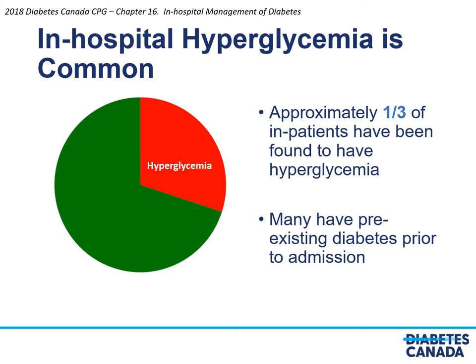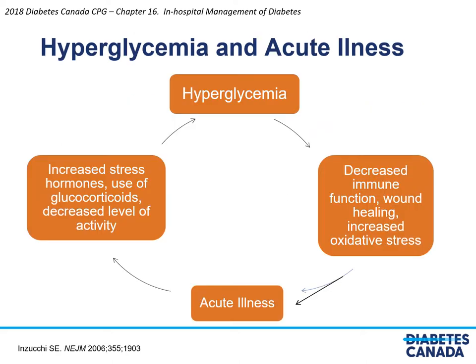In-hospital hyperglycemia is common, with approximately one-third of inpatients having been found to have hyperglycemia. Many patients have diabetes prior to admission. Hyperglycemia has a strong relationship to acute illness — it both reflects and results in a number of physiological changes which decrease immune function and wound healing, and increases oxidative stress, which can further exacerbate acute illness. The acute illness can further exacerbate hyperglycemia through mechanisms such as increased stress hormones, therapies such as glucocorticoids, and decreased levels of activity. The question is whether reducing the hyperglycemia could result in reductions in poor outcomes for hospitalized patients.